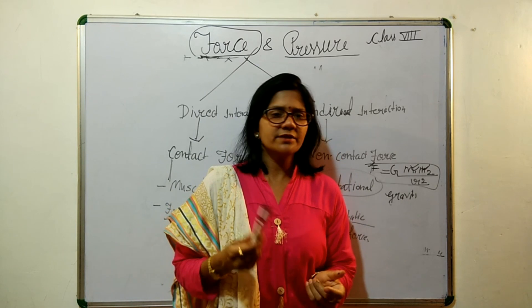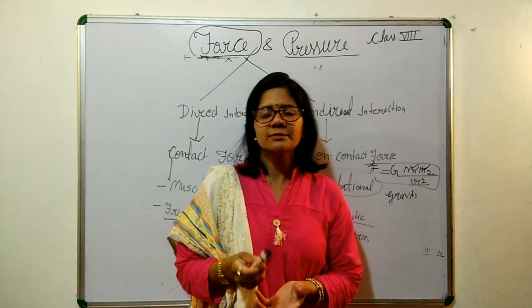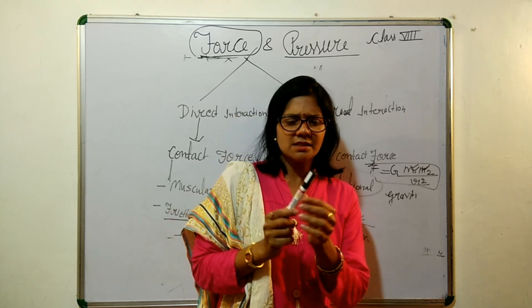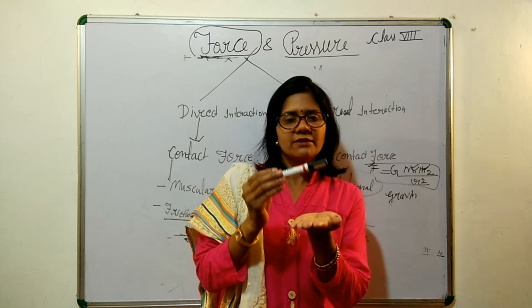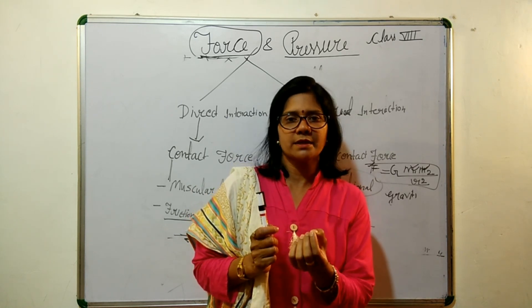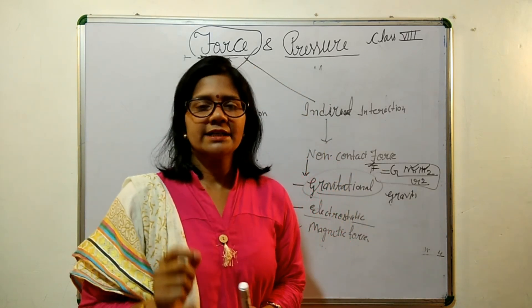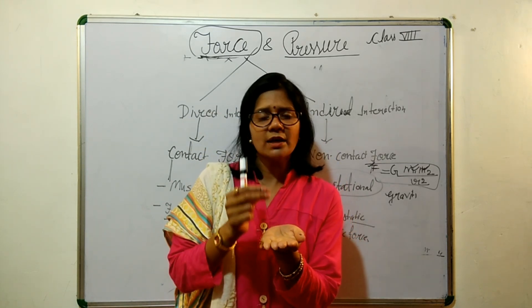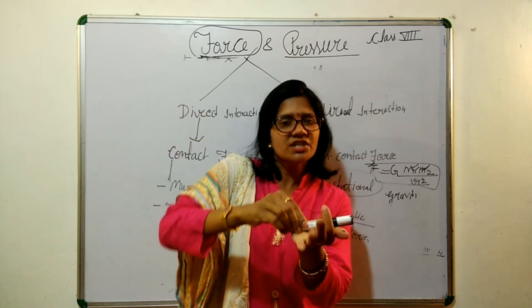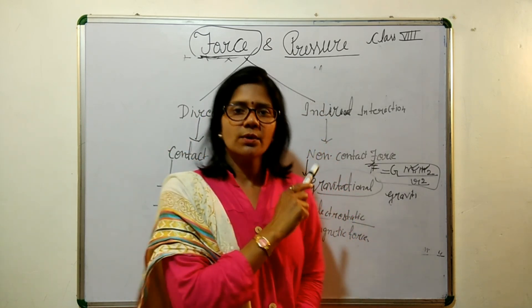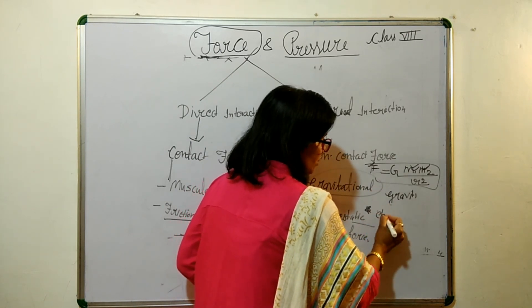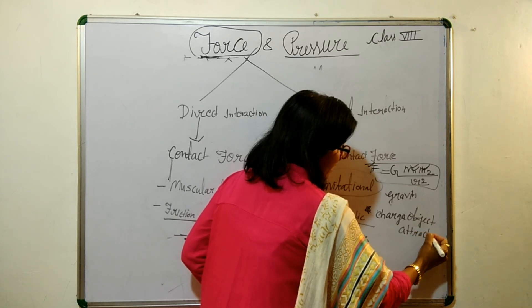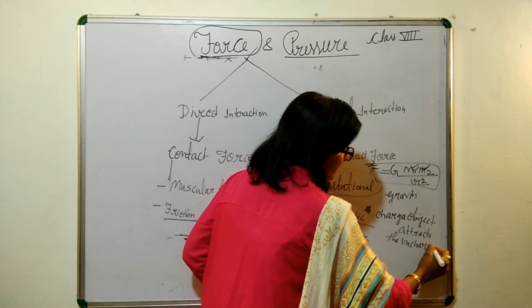Electrostatic force: if you rub a plastic or non-conducting marker, it gets charged. This charged marker will attract small bits of paper, which are uncharged — that is an example of electrostatic force. Because of rubbing, the marker gets charged, and a charged object can attract an uncharged object.